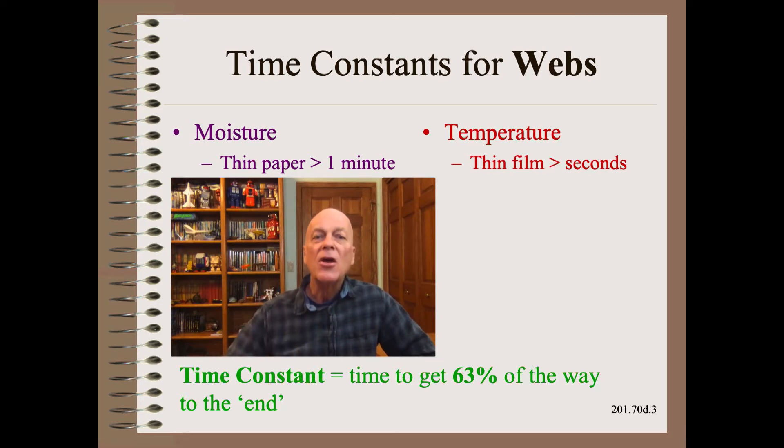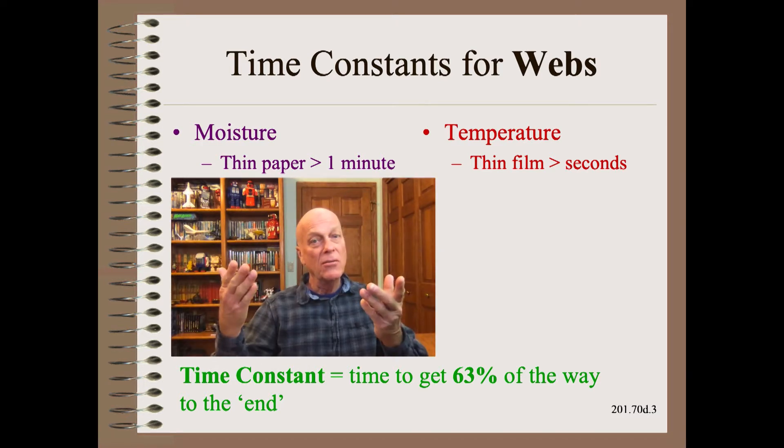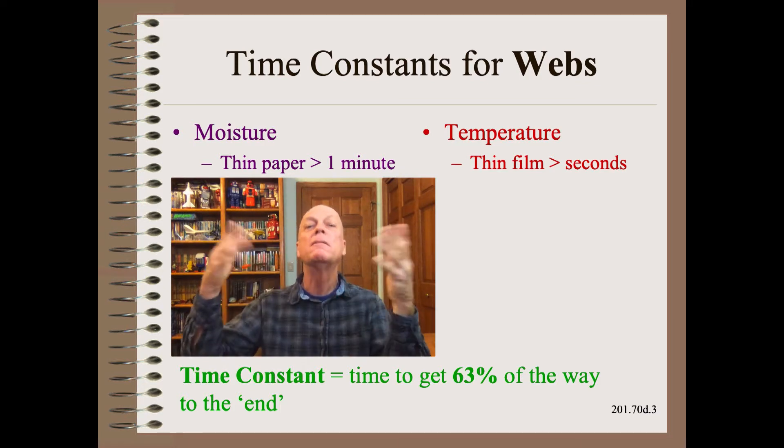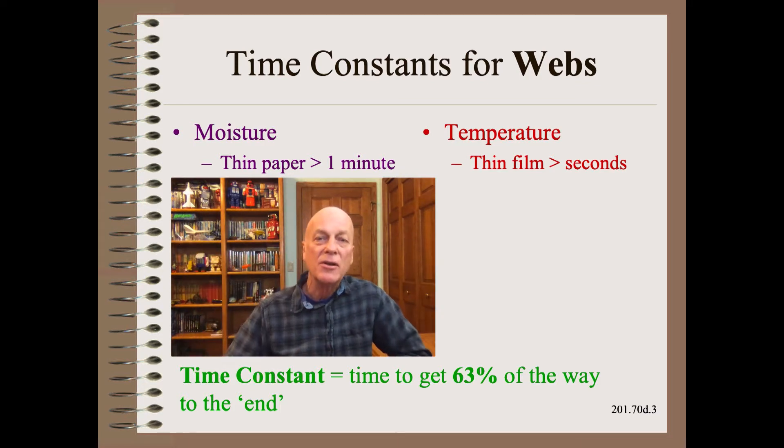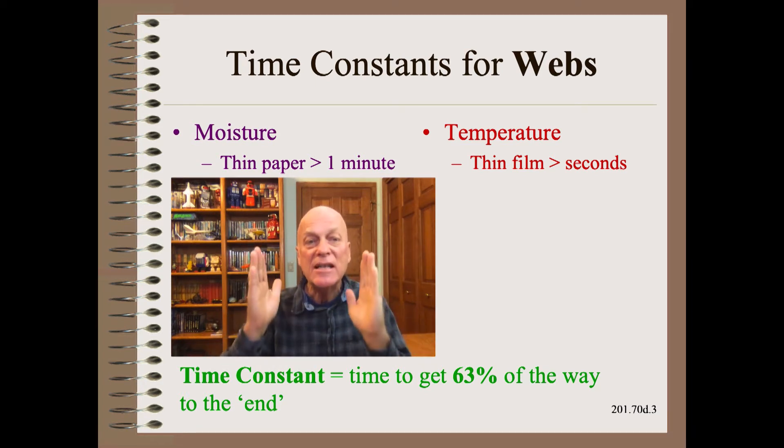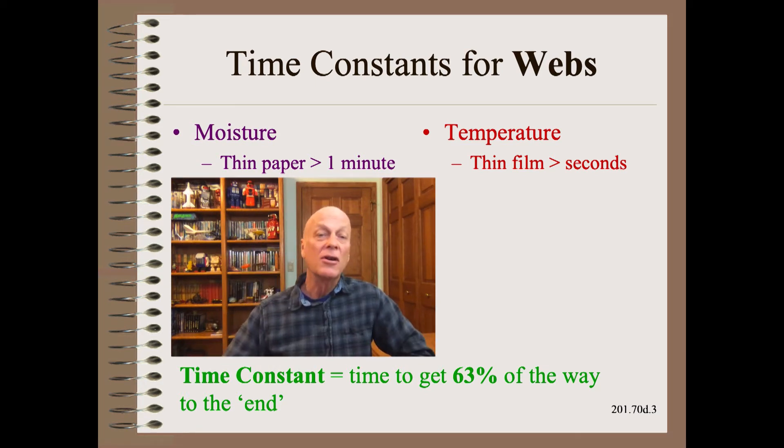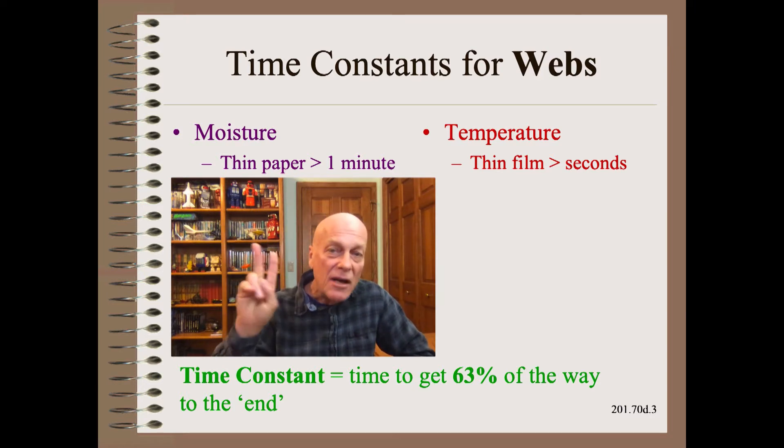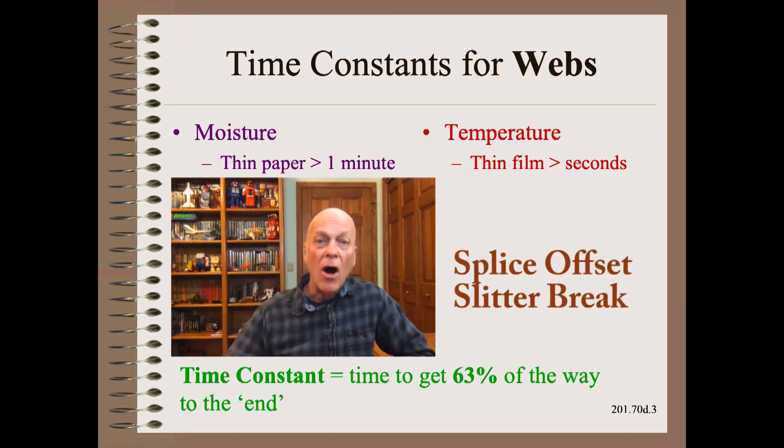For example, we know that while running paper on a web machine, the paper web simply does not have time to change moisture in the transit between the unwind and the rewind. That changes when the machine is stopped, when there is plenty of time for the paper to change moisture and thus change length, width, and so on. That mere winder stopping event in turn is a major cause of at least two defects. One is called the splice offset and another is the slitter blade breaks.